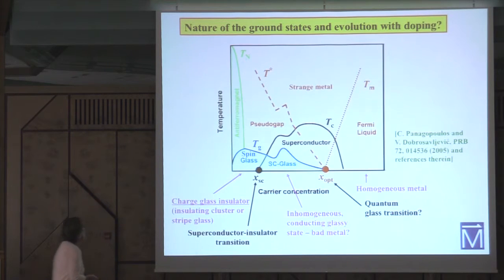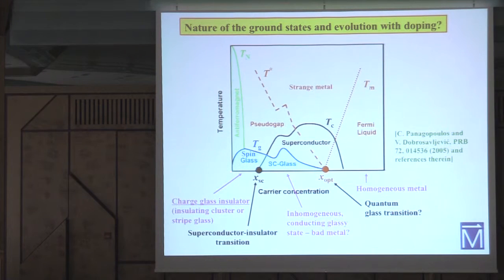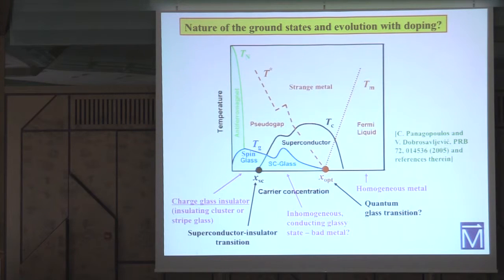That same year, Christos and Vlad published a paper in which they analyzed the various old experiments done on cuprates and argued that they could be understood in terms of a phase diagram where the ground state at very low doping is a charged glass insulator — some kind of cluster or striped glass — separated from a homogeneous metallic ground state at the highest dopings by some kind of intermediate inhomogeneous phase which is conducting but also glassy: a form of bad metal.